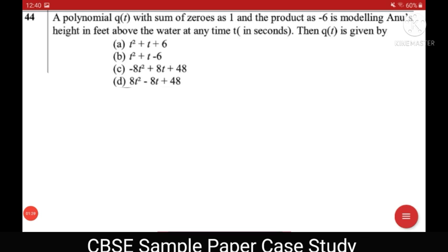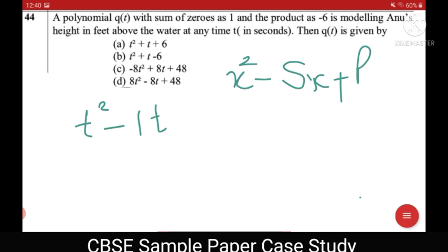Question number 44 gives us a polynomial qt whose sum of the zeros and product of the zeros is given. Now do you remember the formula when sum and product is given it is x square minus sum into x plus product. Now here we have to find it in t. So I have t square minus sum of the zeros is 1. So 1t plus product. Now product is minus 6. So I get minus 6. So this gives me t square minus t minus 6.